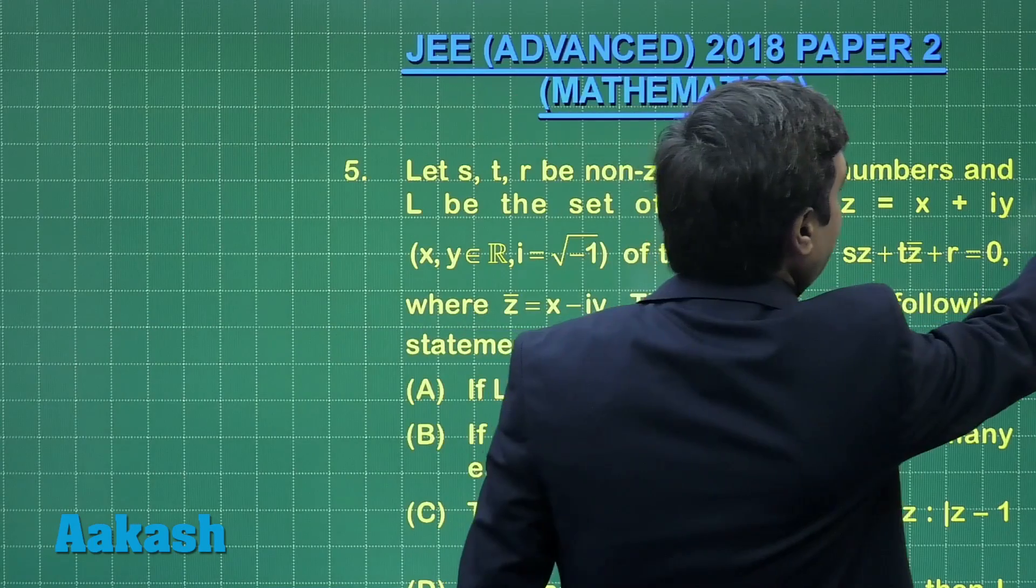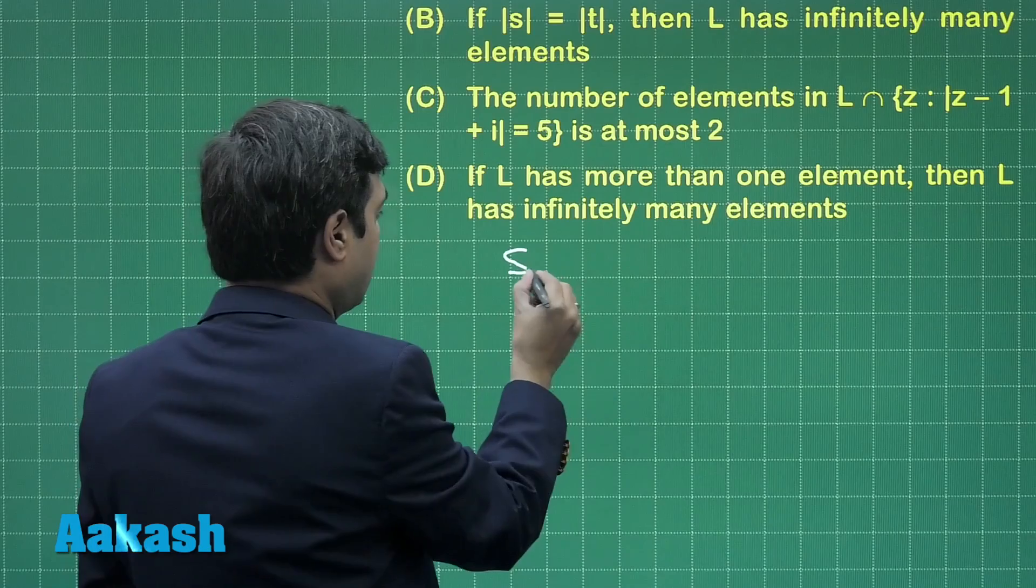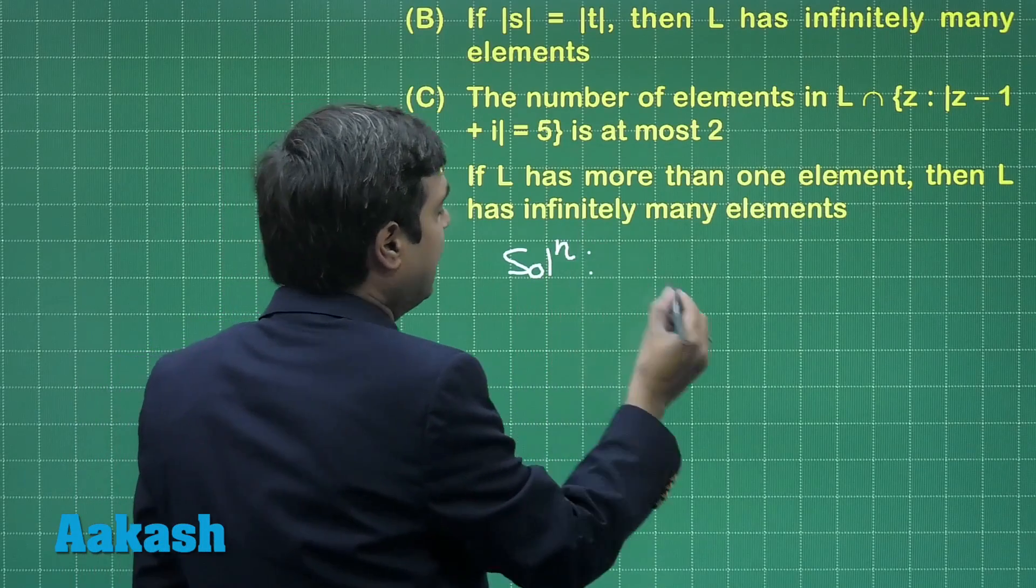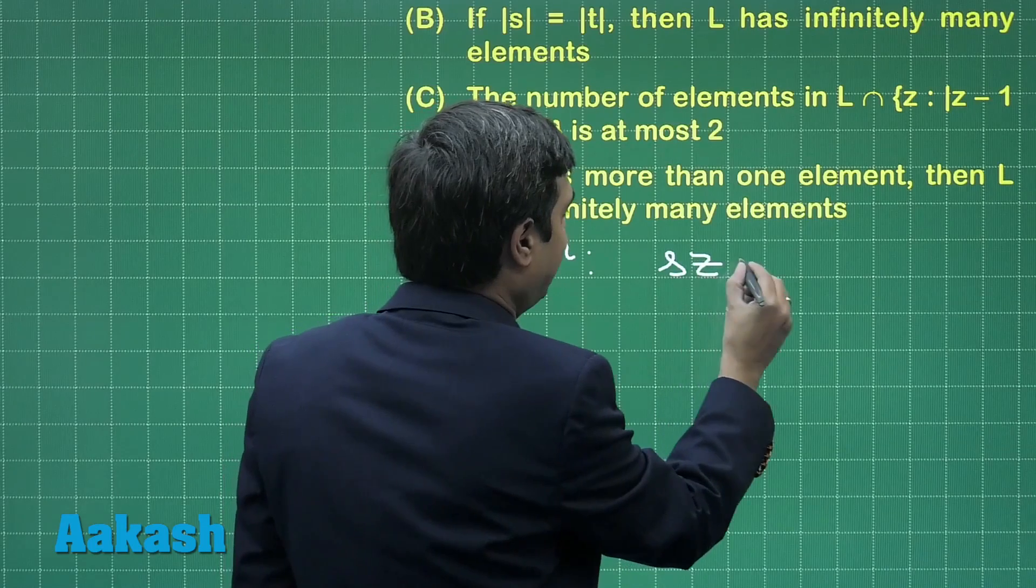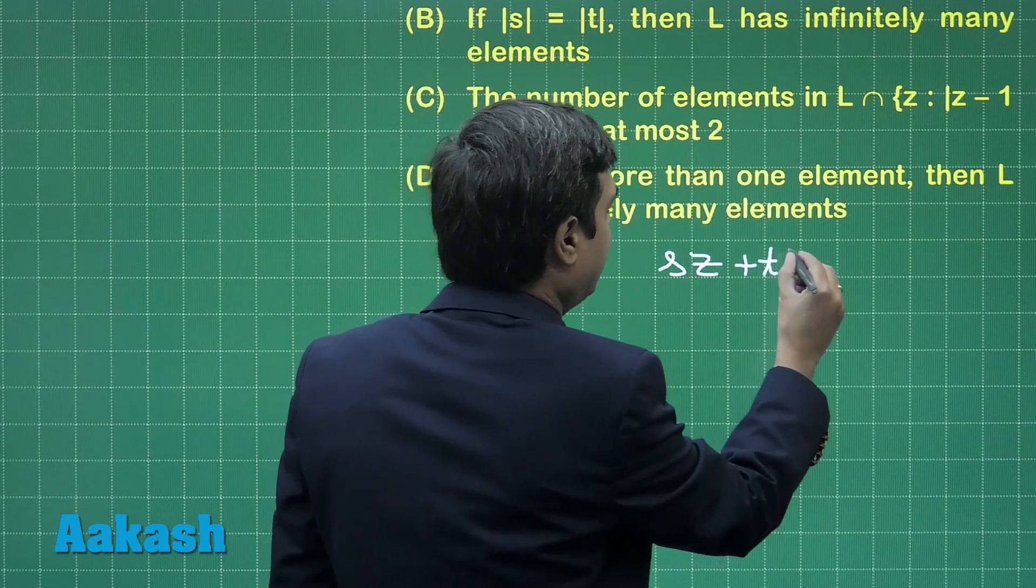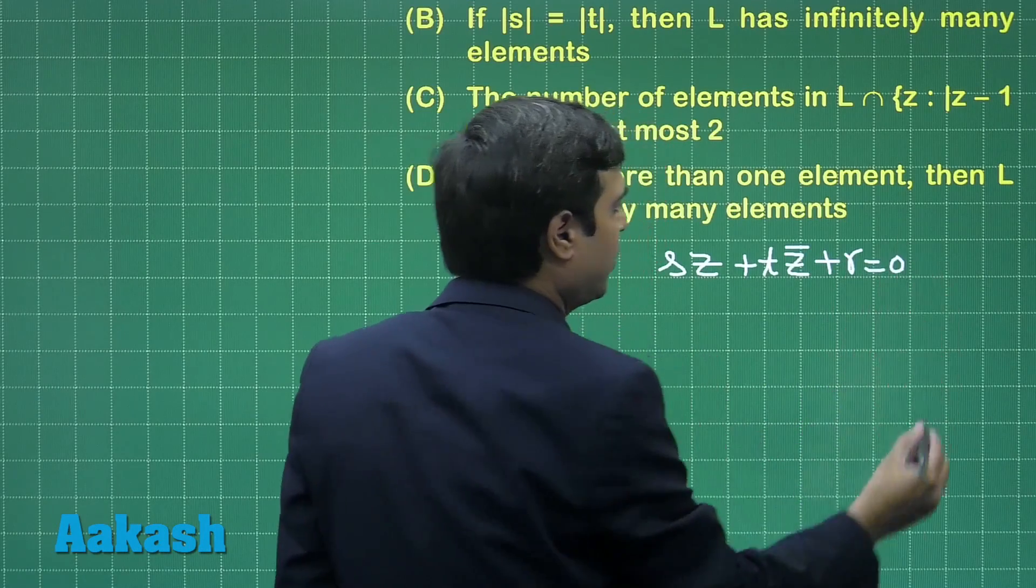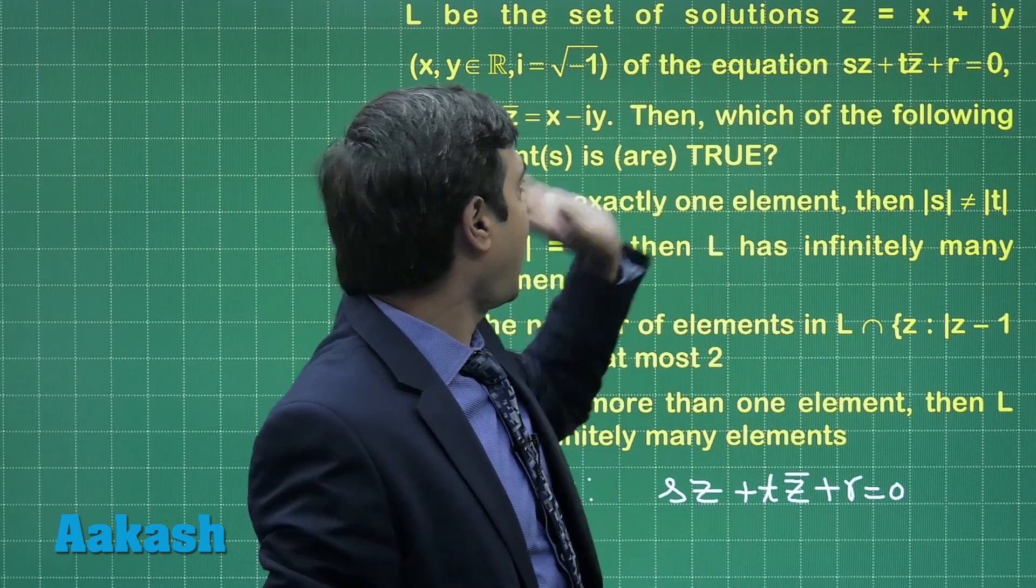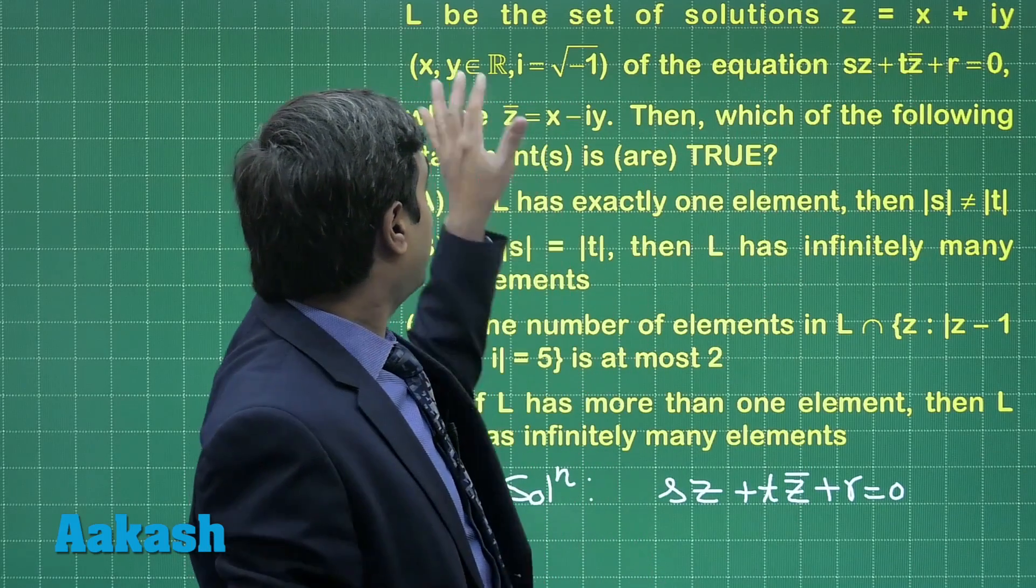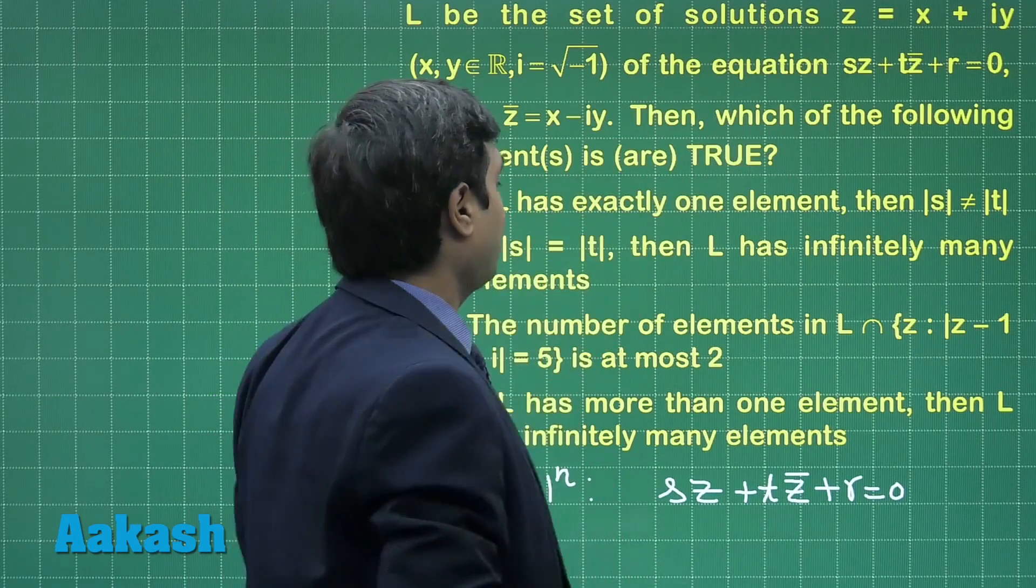Starting with the same equation, the given equation is Sz plus Tz̄ plus r equals 0. The question is talking about L being the set of solutions of z for this equation.